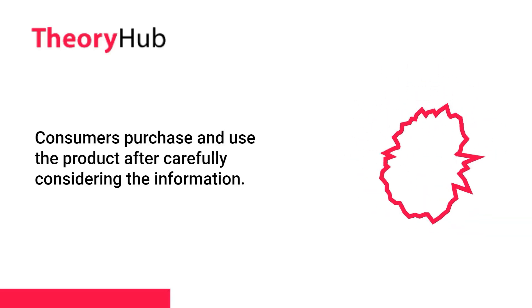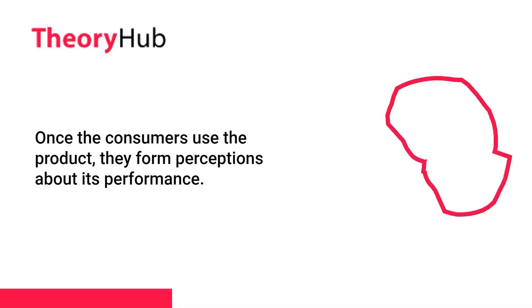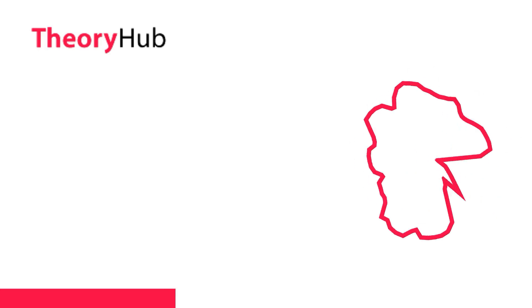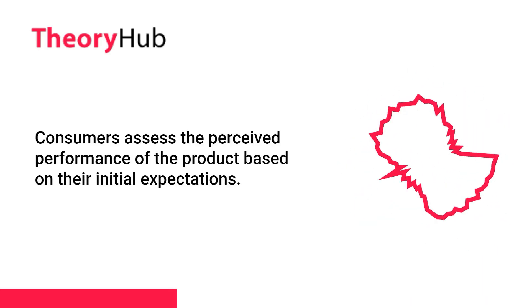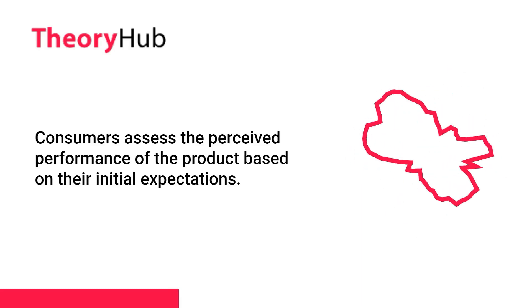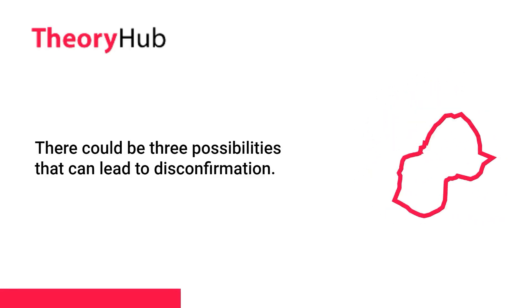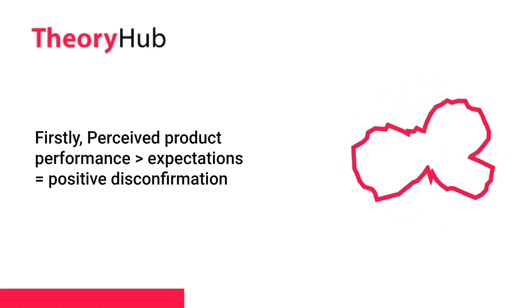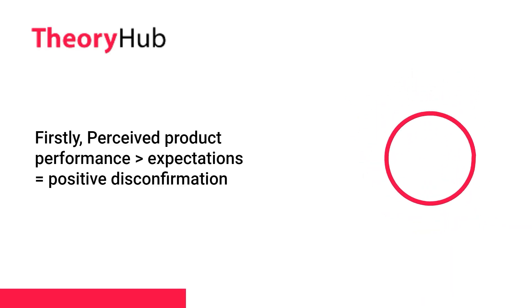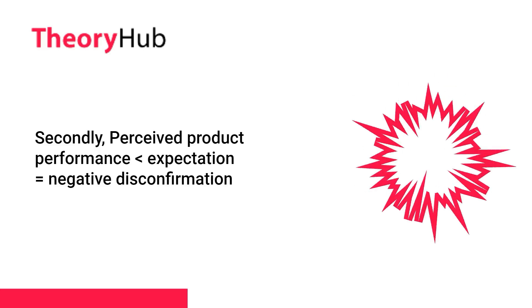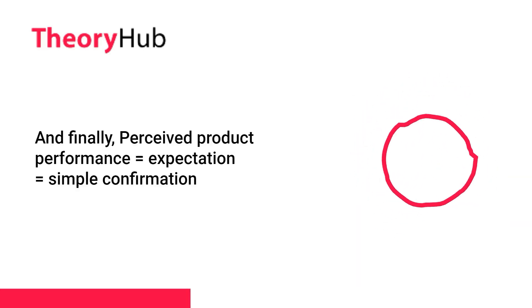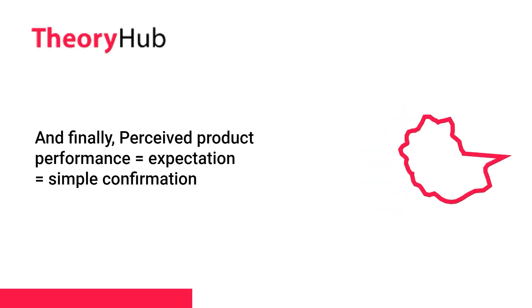In the second step, interaction and experience, consumers purchase and use the product after carefully considering the information. Once consumers use the product, they form perceptions about its performance. In the third step, confirmation or disconfirmation, consumers assess the perceived performance of the product based on their initial expectations. There are three possibilities: perceived product performance greater than expectations equals positive disconfirmation; perceived product performance less than expectation equals negative disconfirmation; and perceived product performance equals expectation equals simple confirmation.